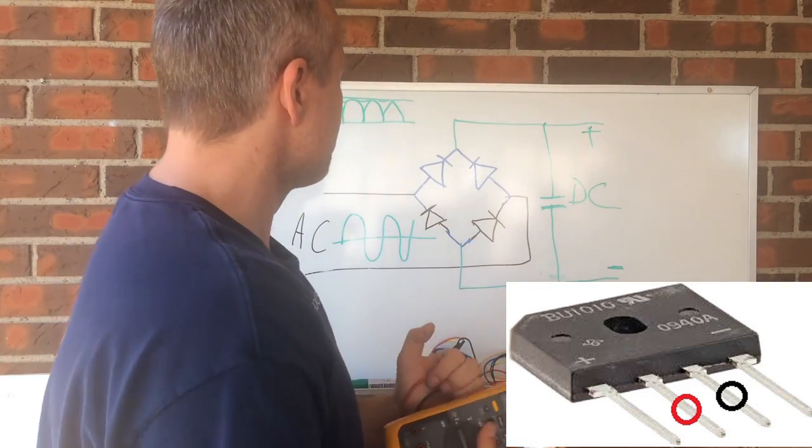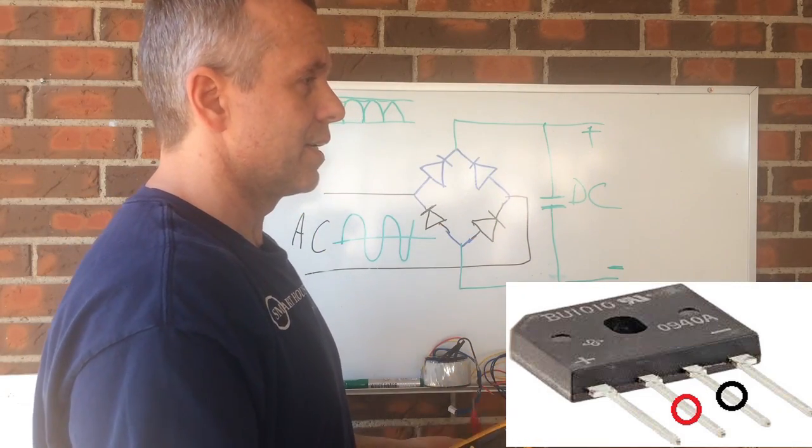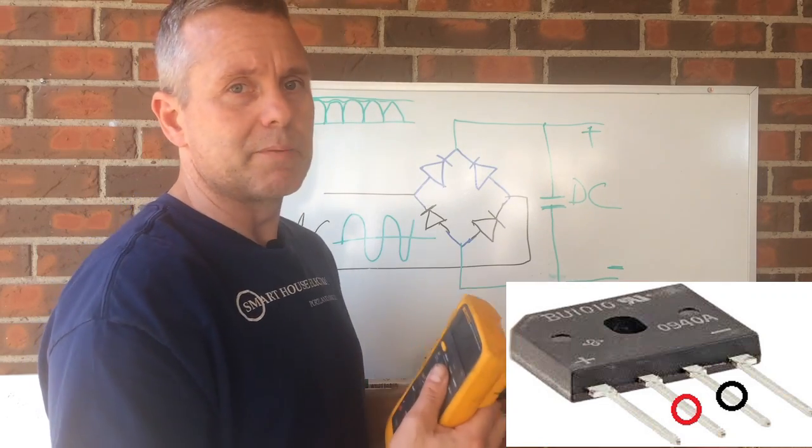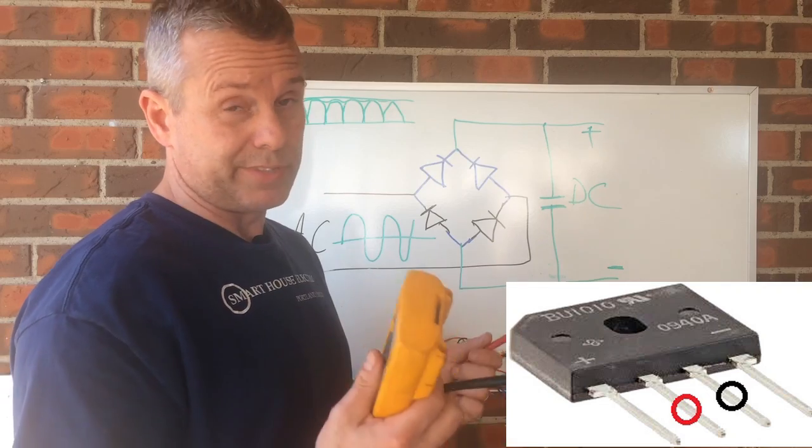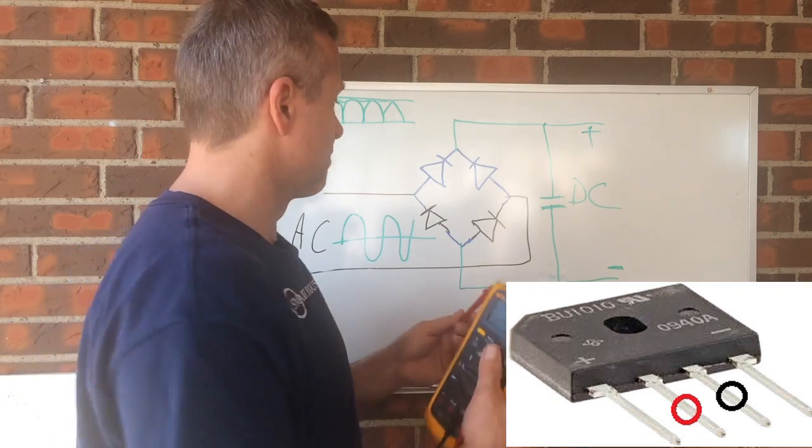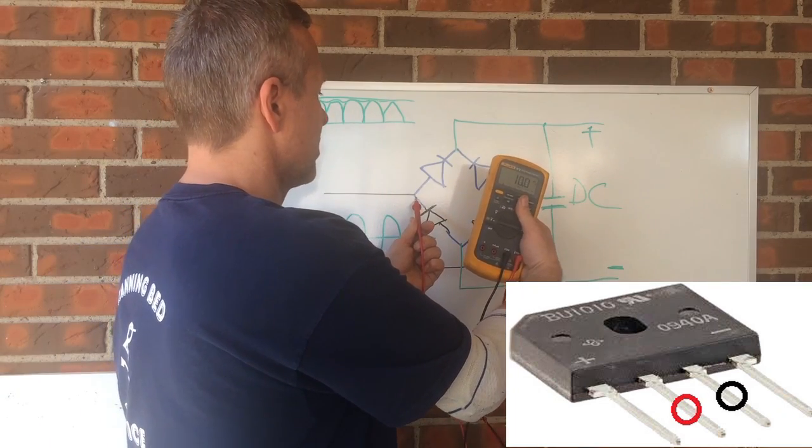And what you will do is that you will find the AC input. And that's usually the ones that are not marked with anything, or will say AC on them. And then you measure across here.